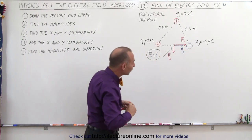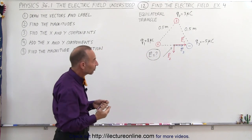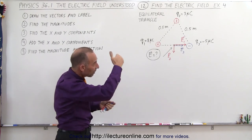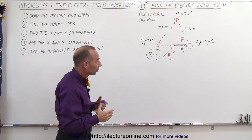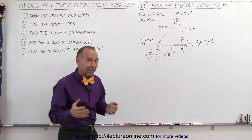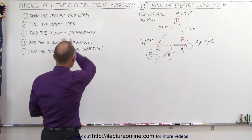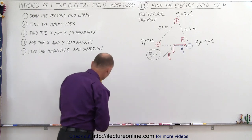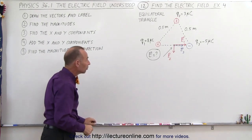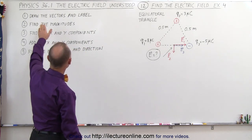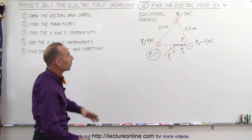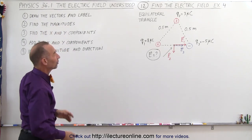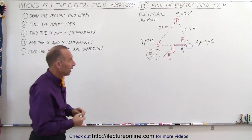If we sum up all three vectors we're going to end up with a vector pointing somewhere off at an angle. We'll probably have to find the magnitude and direction, so we'll need to follow all of the steps to get the final answer. We've done step one — we drew the vectors and labeled them. Now we're ready to move on and find the magnitude of those three vectors.